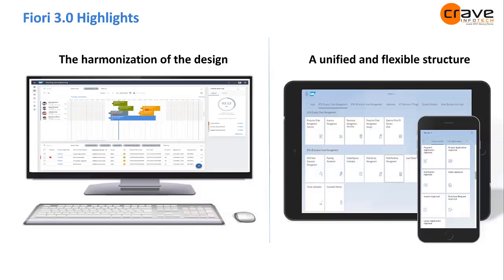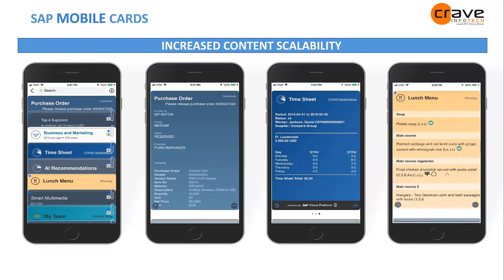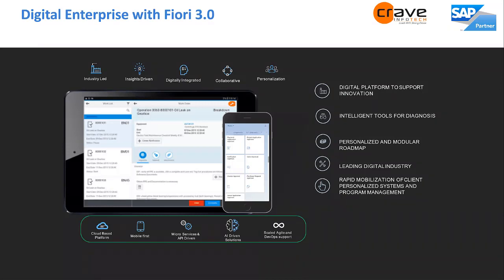SAP has rolled out Fiori 3.0 with nice features: you can now have Gantt charts, and it has a unified and flexible structure. With 1.0 and 2.0 we had a tile-based structure, but SAP is now bringing a mobile card-based structure — similar to Apple Wallet — into 3.0. Instead of tiles, you can have mobile cards. They've overcome some challenges from 2.0 with a better user interface and more controls for developers to create better templates.